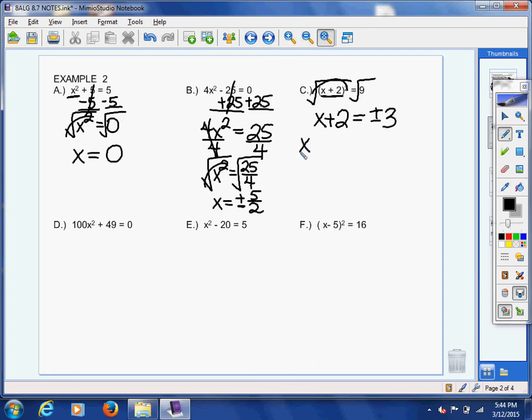So we're going to set up two equations, x + 2 = 3, and x + 2 = -3, because there's two possibilities for the square root of 9. It could be positive 3 or negative 3. So now we're going to subtract 2. So one of my zeros is going to occur at positive 1, and my other zero is going to occur at negative 5. And there's my two zeros.